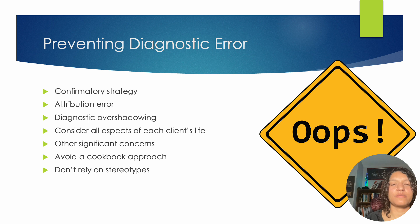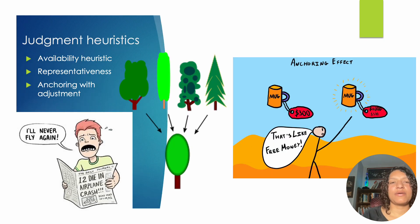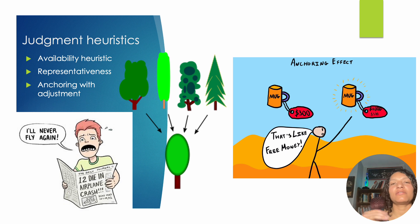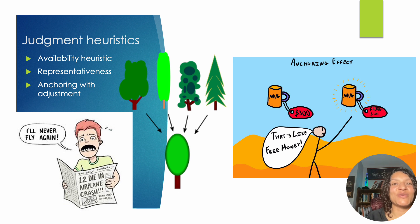We've talked about the cookbook approach and not using stereotypes. Heuristics: these are mental shortcuts or rules of thumb that help us make decisions and judgments quickly, and that can be really helpful in situations. Going back to the John and Amy example, there might be heuristics he uses that help him make fast decisions at work — but we saw how those same heuristics might be very negative or harmful to coworkers. Here are a couple of heuristics that might be helpful but also worth paying attention to.